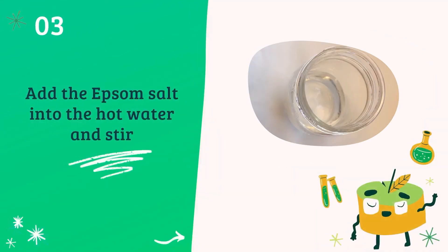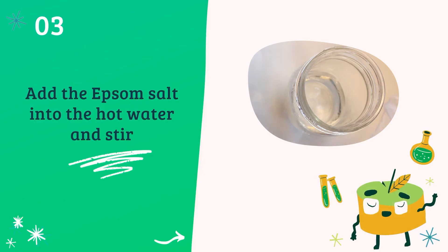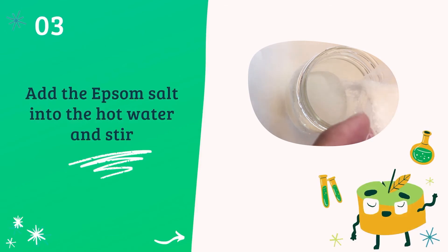Now, have the adult pour the hot water into the mason jar or container and carefully add the six tablespoons of Epsom salt into the hot water. You can substitute with table salt, sugar, or borax if you don't have Epsom salt. If you like, you can add food coloring as well.